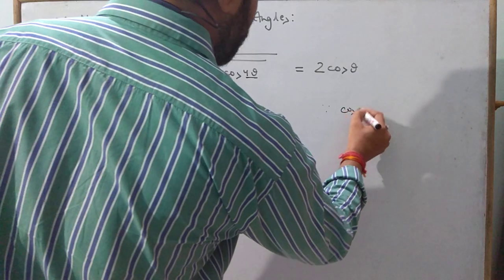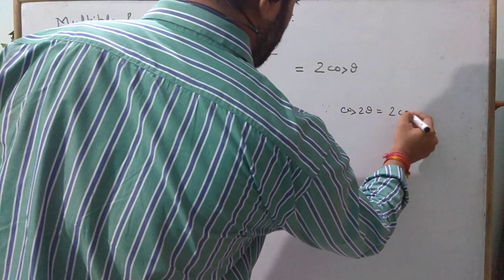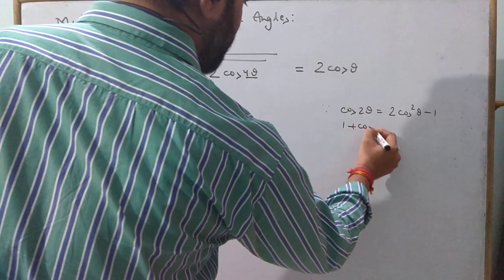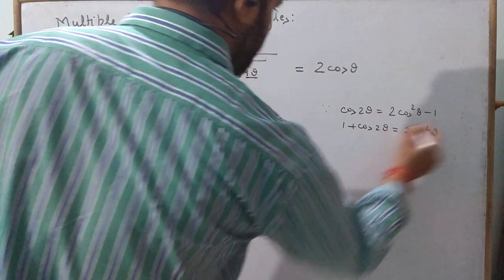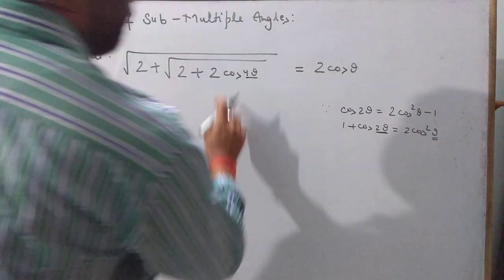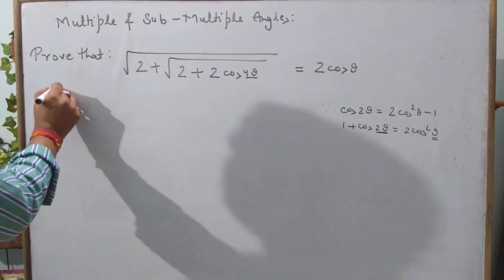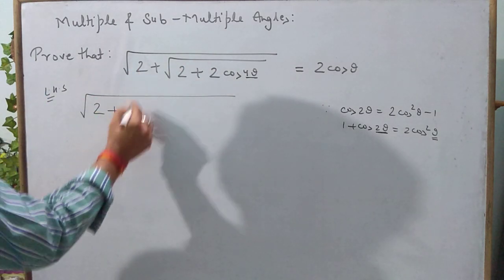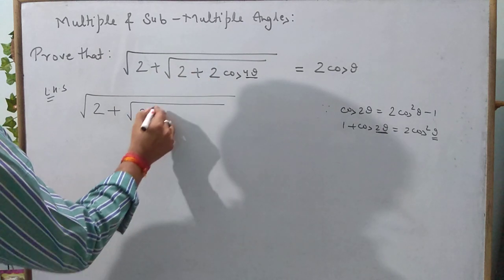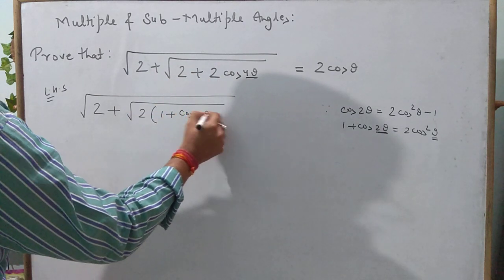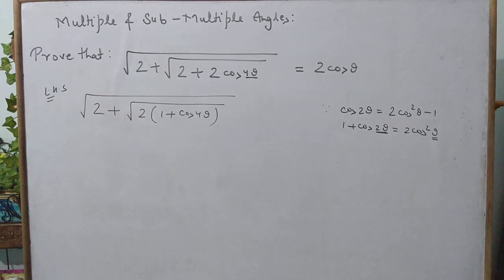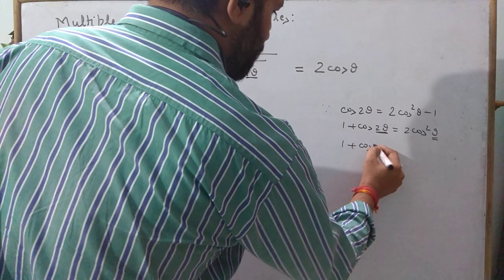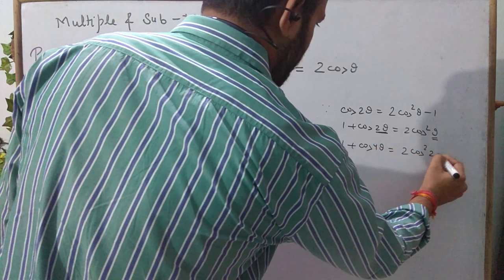Since cos2θ = 2cos²θ − 1, shifting 1 to the other side gives 1 + cos2θ = 2cos²θ. When the angle is 2θ, it corresponds to θ. So taking LHS, we can write it as √(2 + √(2 + 2cos4θ)). Since 1 + cos4θ = 2cos²2θ, substituting gives √(2 + √(2 · 2cos²2θ)).